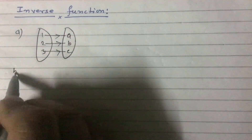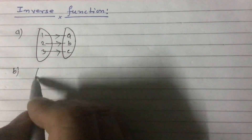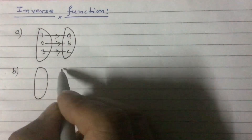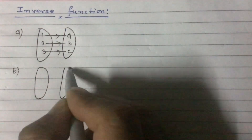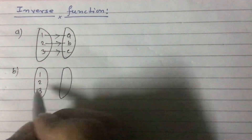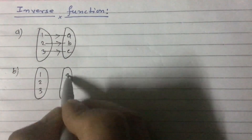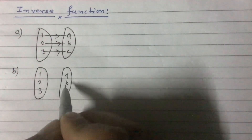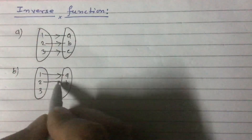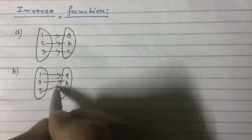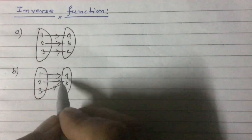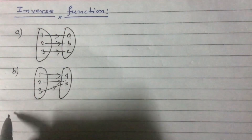Similarly, type B is another type of function. For example, 1 maps to A, 2 maps to B, and 3 also maps to B. This is a many-to-one onto function.